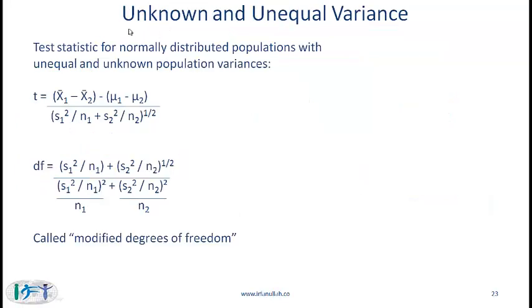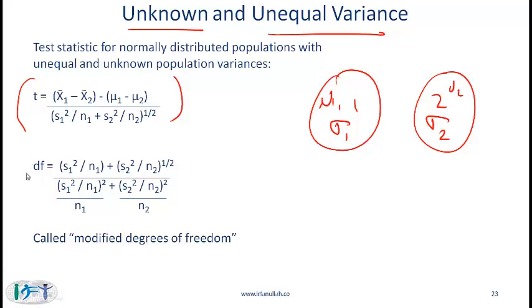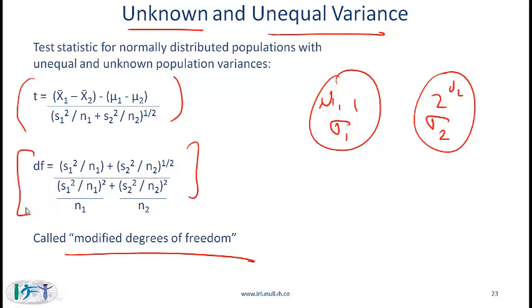The other situation is where the variance is unknown and unequal. So the two populations 1 and 2 have variances sigma1 and sigma2, with means mu1 and mu2. The t-statistic is calculated in the same way, but now we also need to calculate a degrees of freedom that is a little different from the simpler calculation we saw earlier. This is called the modified degrees of freedom, given by a more complicated formula. The probability of having to reproduce this formula on the exam is extremely remote, so just recognize that it exists.